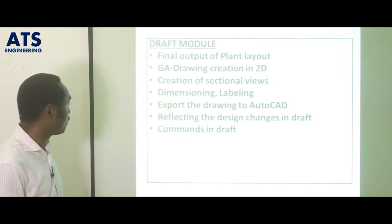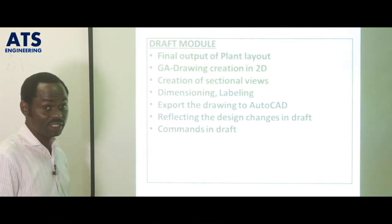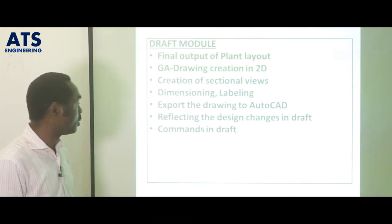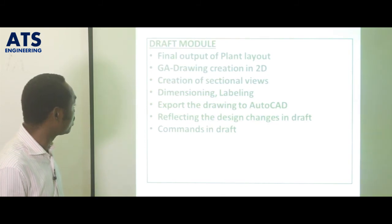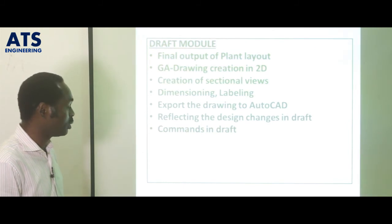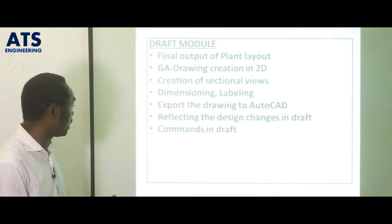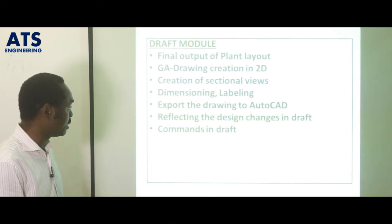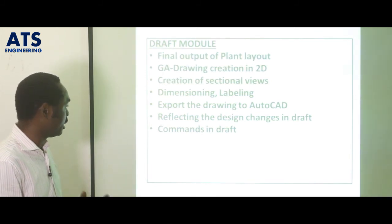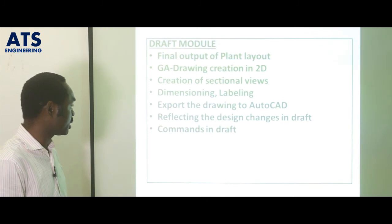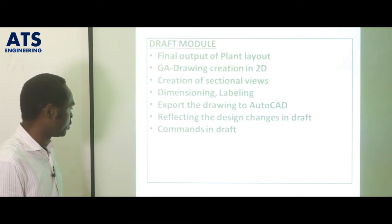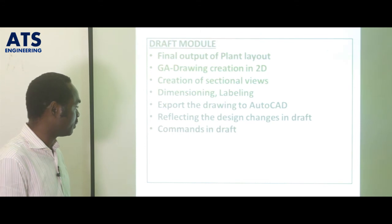Finally, looking at the draft module, which will be used to produce 2D drawings from the 3D model. It is used to provide a final output for the plant layout. We can produce piping general arrangement drawings and section views. We can dimension and label — meaning detailing the 2D drawing in PDMS in the draft module — and then export to AutoCAD for use. We can also learn some commands in the draft module.